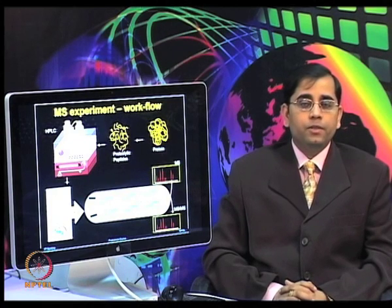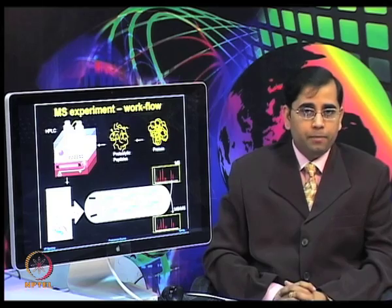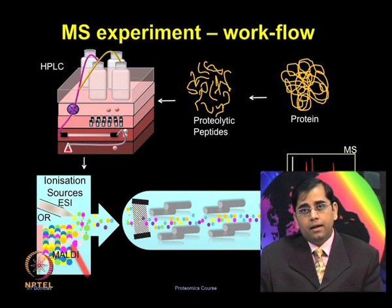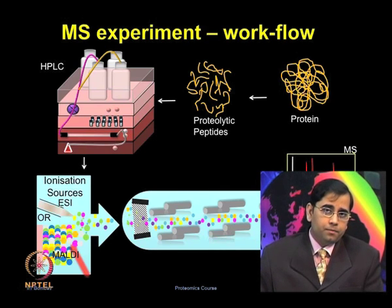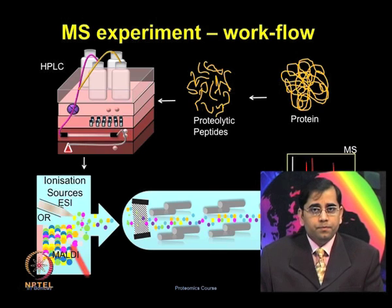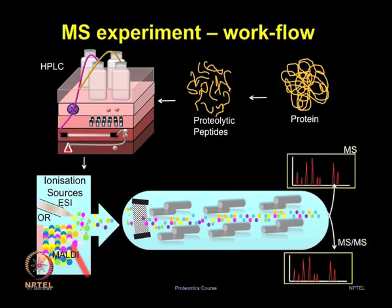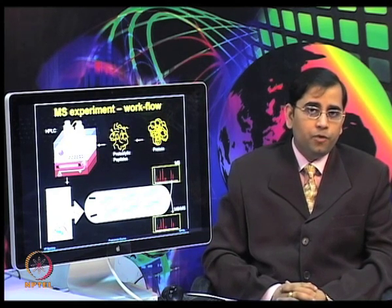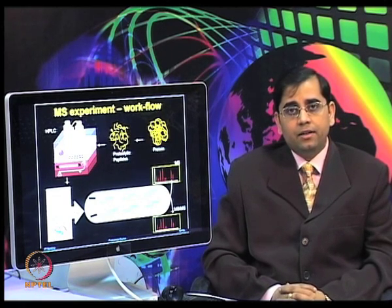This slide shows you an overview of the workflow involved in performing an MS-based experiment. First, you can pre-fractionate your sample using liquid chromatography or other pre-fractionation methods. After pre-fractionation, in-gel digestion or proteolytic cleavage can be performed using enzymes such as trypsin. The sample can then be injected into the ionization source — commonly ESI or MALDI — and the ions are resolved in mass analyzers. Data can be analyzed in MS or MS-MS mode.